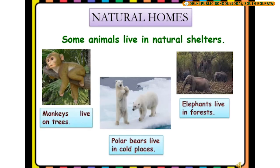In this slide, we can see some more examples of animals that stay in natural shelters. They are monkeys, polar bears, and elephants. Monkeys live on trees, polar bears live in cold places, and elephants live in forests. They all stay in a natural shelter.